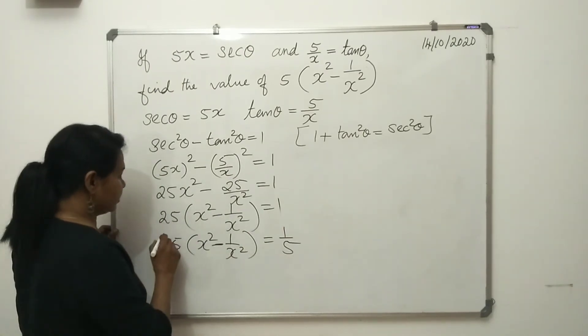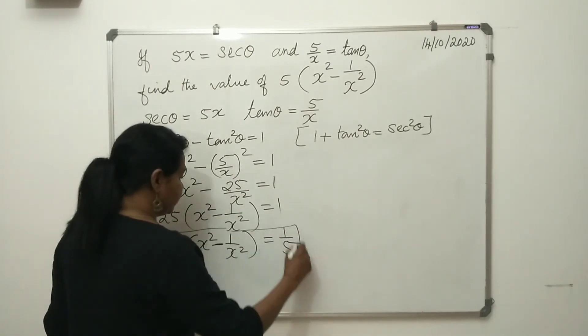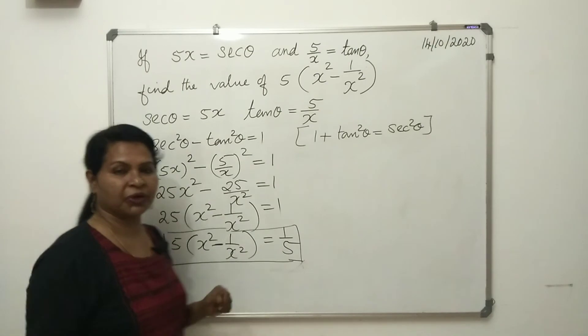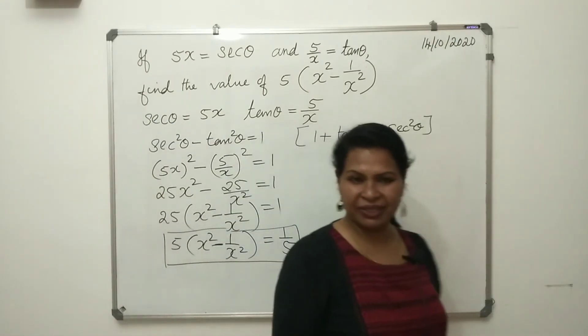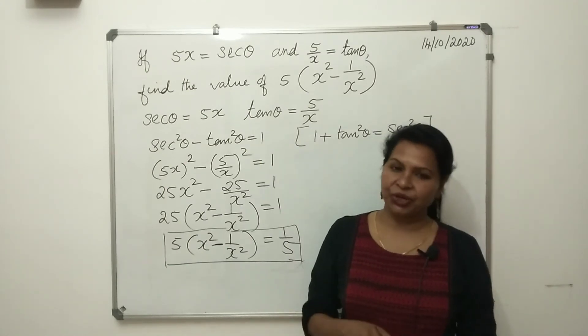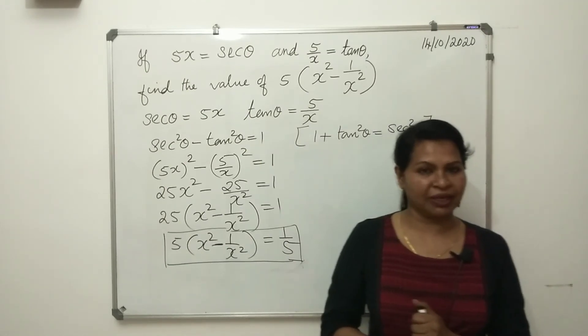This is the answer. So 5 times (x² - 1/x²) is equal to 1/5. That is the answer. Simple, very simple. If you like the class, please share and subscribe. Thank you for watching my class.